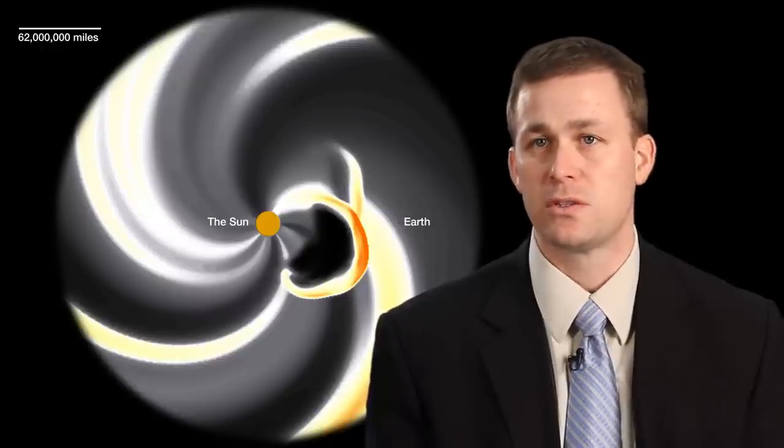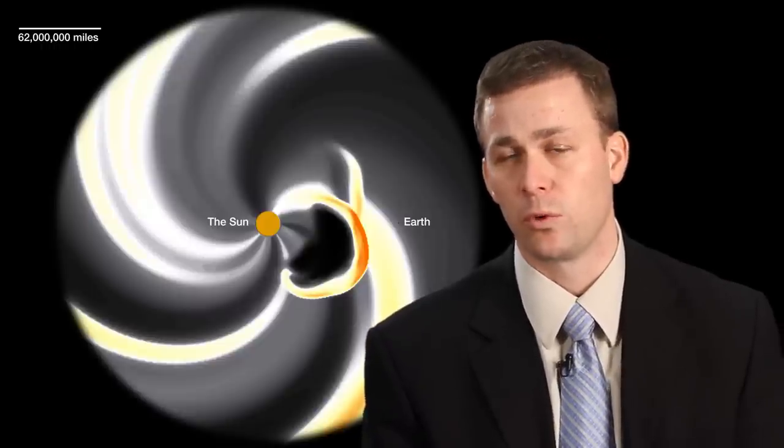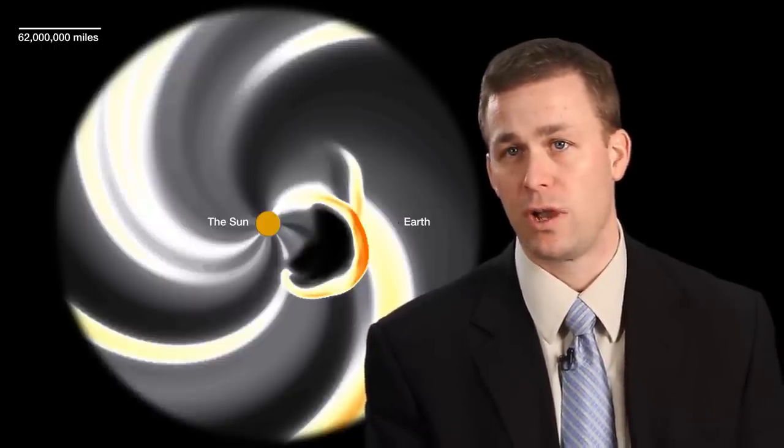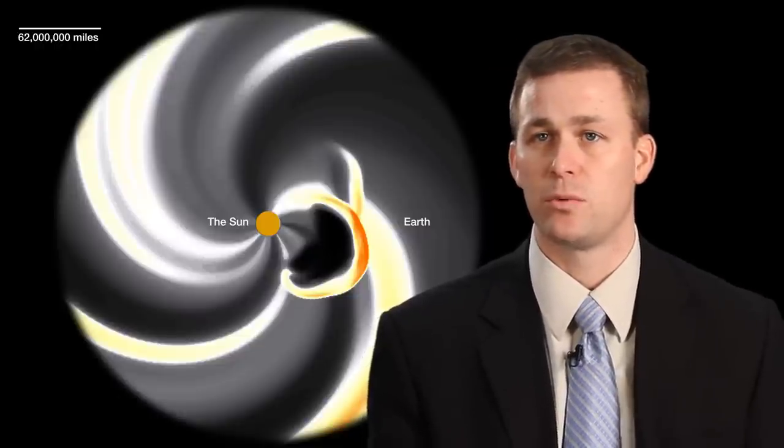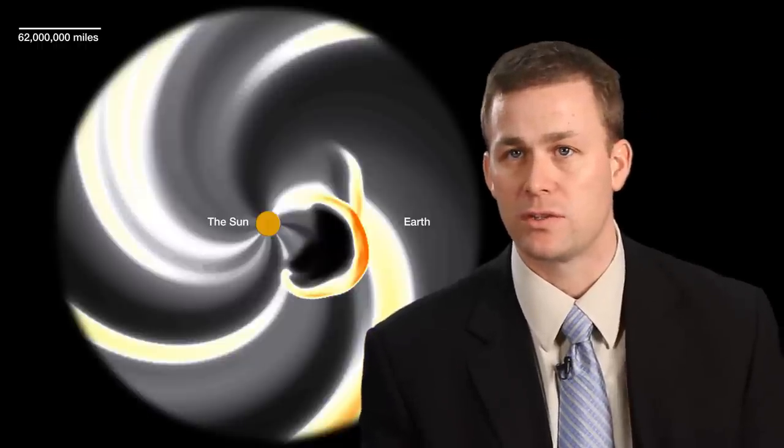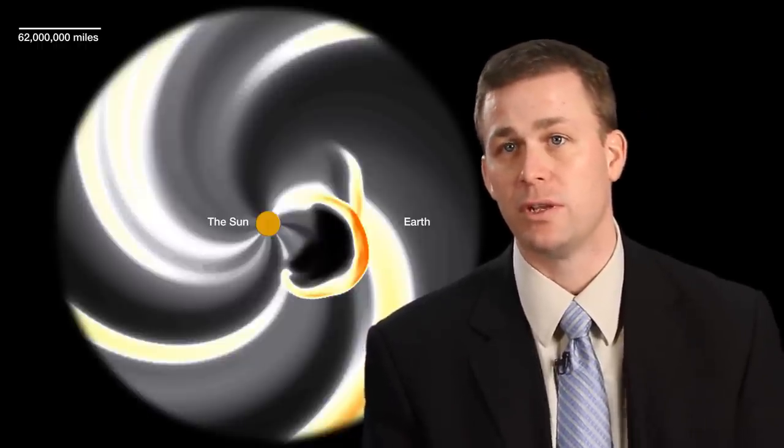Space weather plays out in a number of different timescales. The first piece, the solar flare piece, is really instant. When we're measuring it on our geosynchronous spacecraft, it's here, it's affecting the Earth. The next piece is the radiation storm piece, energetic particles impinging on satellites or astronauts in space. That can come in tens of minutes.